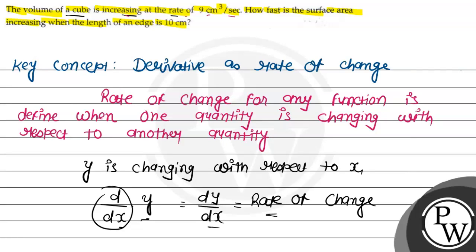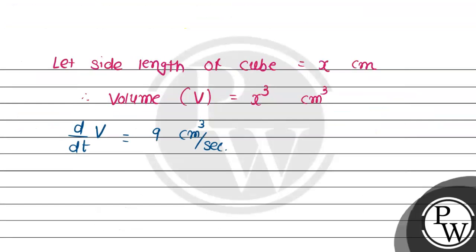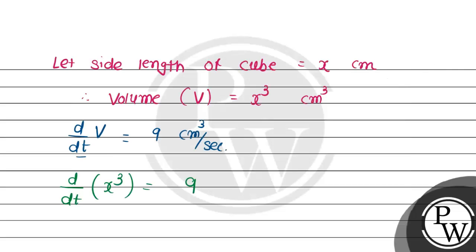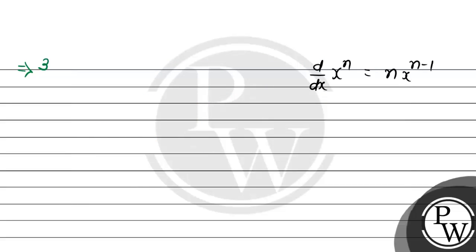So dV/dt: we substitute the value of V, so that will be d/dt of x cubed, which equals 9. Using the general rule d/dx of x to the n equals n times x to the n minus 1, we differentiate x cubed with respect to t. That gives 3x squared times dx/dt equals 9.